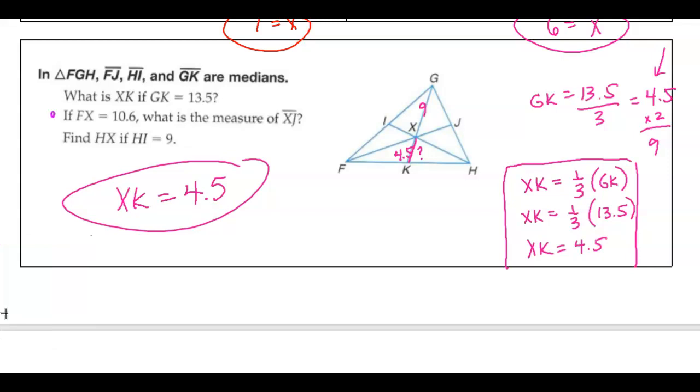Let's try the second part. So if FX, so here's F to X is 10.6, and that's the top part, so that's 2 thirds. What is the measure of XJ? So what we know is that FX is equal to 2 thirds, and that XJ is equal to 1 third. So remember, this means that I doubled something. I doubled whatever XJ is. So if we take 10.6 and we divide it by 2, we get 5.3, and that's the single amount.